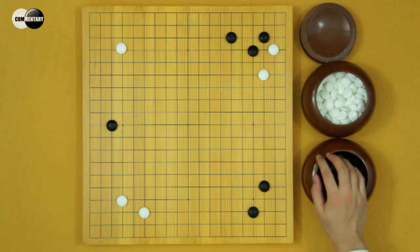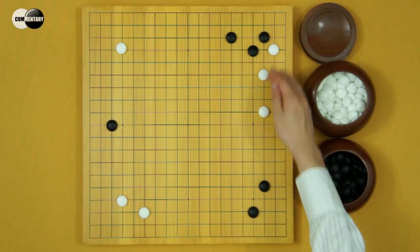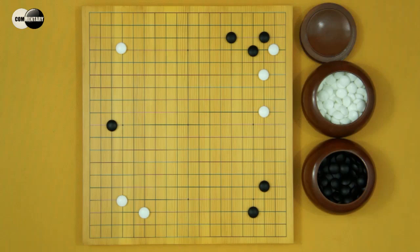If Black kosumi, White extends. The two corners on the right side were Black's corner. Now White gets this shape. White is satisfied. Couldn't be better. This diagram is good for White.